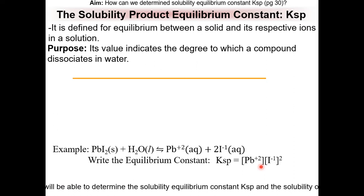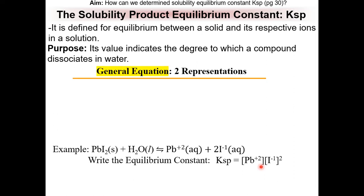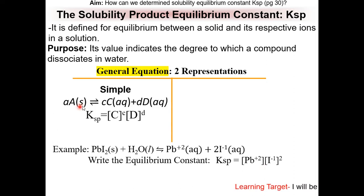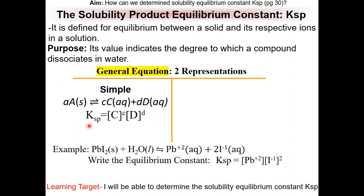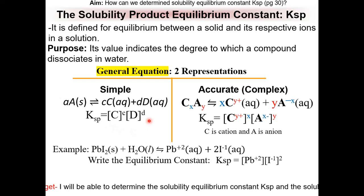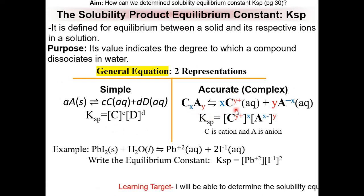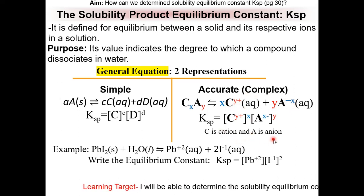The general equation for Ksp has two representations. The simple one shows a physical change of an ionic compound dissolving in water, splitting into two ions — one positive, the other negative. The equilibrium constant Ksp only includes the ions. Here is the more complex and accurate version of the general equation. It clearly shows the charges of C and A: C is a cation, A is an anion, and CₐAᵦ is the ionic compound.